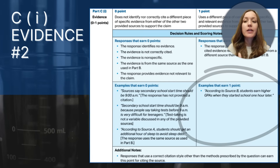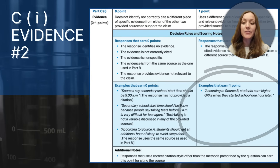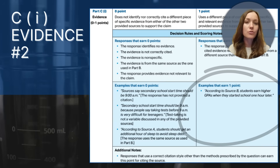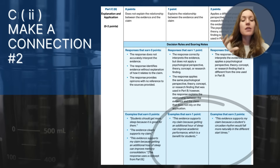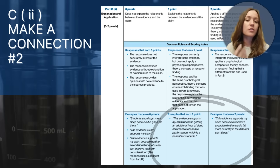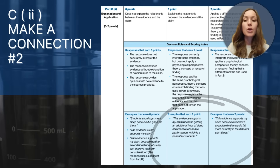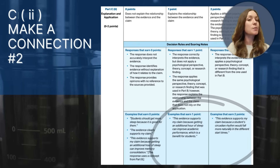For Part C, the example evidence point is: 'According to Source B, students earn higher GPAs when they started school one hour later.' This provides specific, correctly cited evidence relevant to the claim, and it comes from a different source than Part B. The sample response that earns both points for the explanation says: 'This evidence supports my claim because a student's circadian rhythm would fall more naturally in the different start times.' This correctly interprets the evidence and applies the concept of circadian rhythm — which is different from the concept used in Part B.